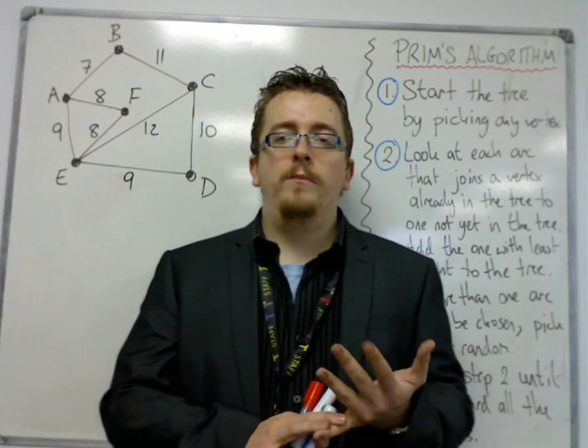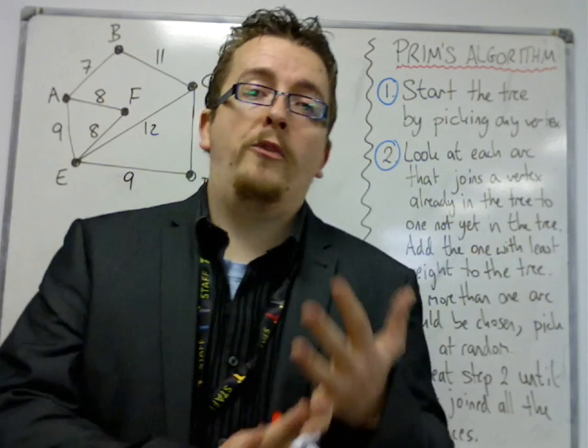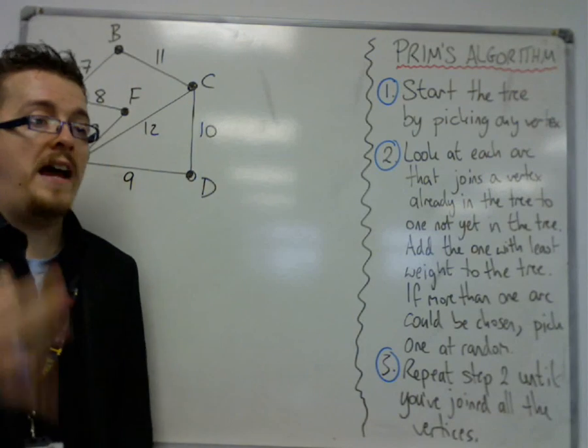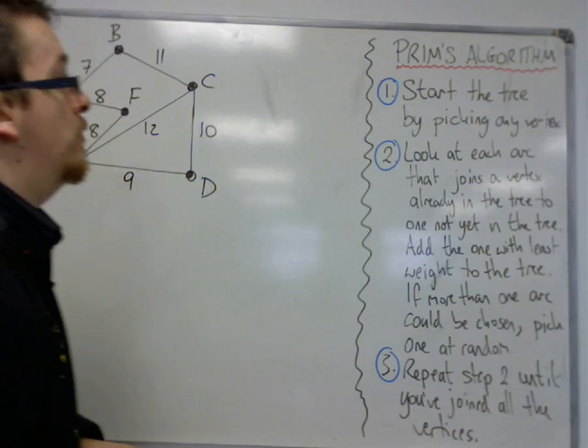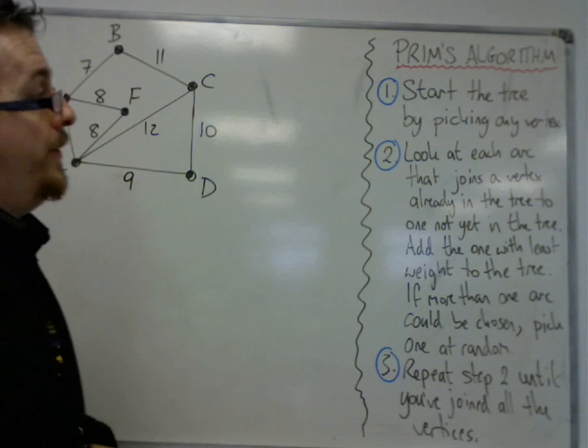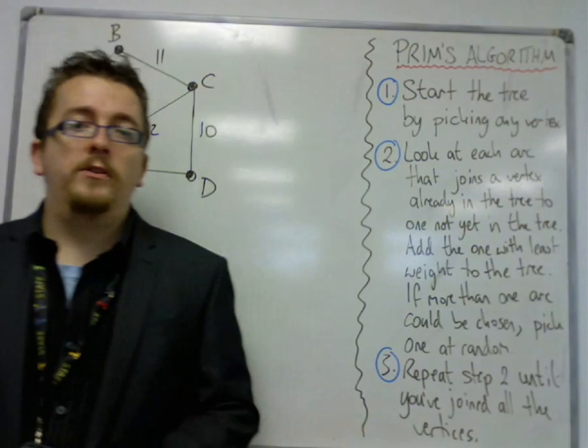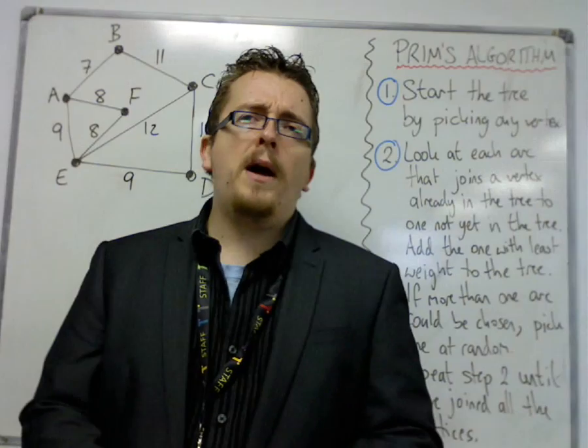We've looked at one algorithm that's used to find the minimum spanning tree, and now we're going to look at the second. The second is known as Prim's algorithm, and is quite similar in style.